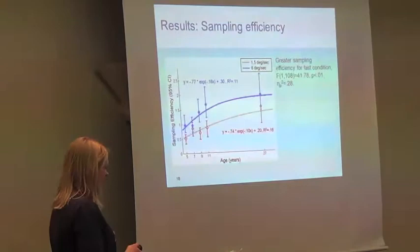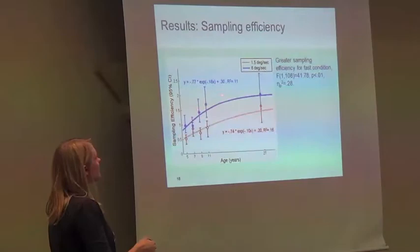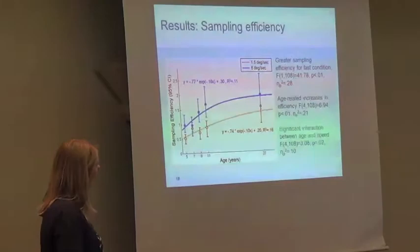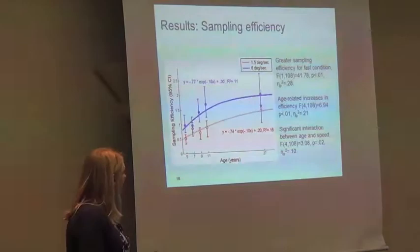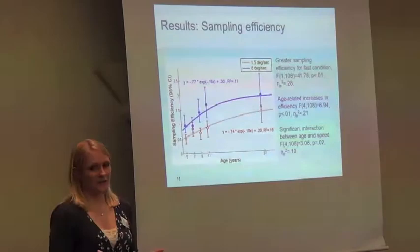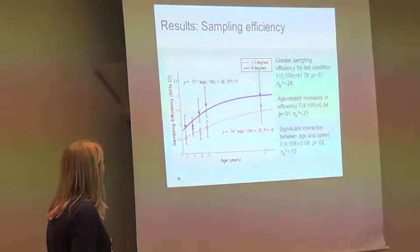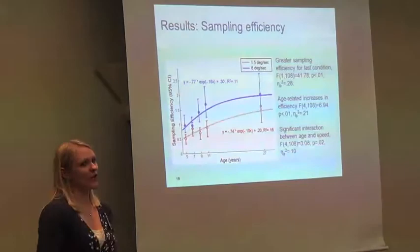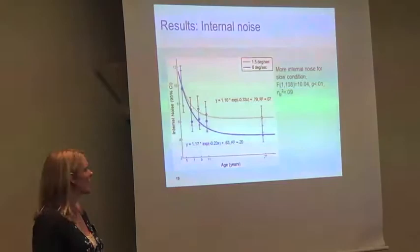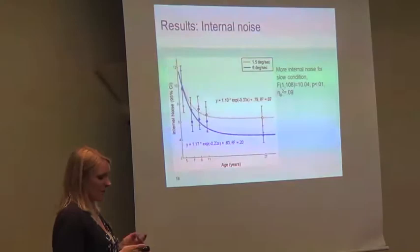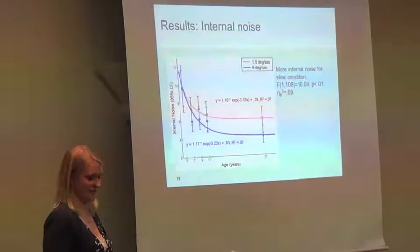Looking at sampling efficiency: there is greater sampling efficiency for the fast speed — people are averaging more dots for the fast condition than the slow condition. Sampling efficiency increases with age. There is a significant interaction between age and speed, but when we looked at the actual slopes of the exponential functions, they didn't vary significantly. What's driving the interaction is these weirdly performing seven-year-olds — they don't show a difference between the two speed conditions, and they were also doing a bit weirdly for internal noise, showing lower internal noise than the nine-year-olds.